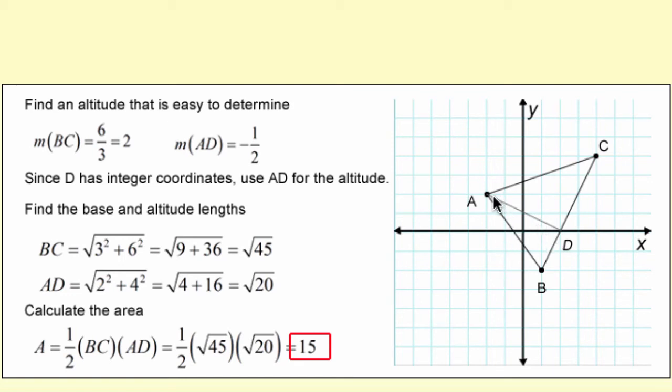So then draw the altitude here and you can use the Pythagorean Theorem to find the length of segment BC and then to find the length of segment AD. Once you have those distances you can put them in the area formula and calculate the area.